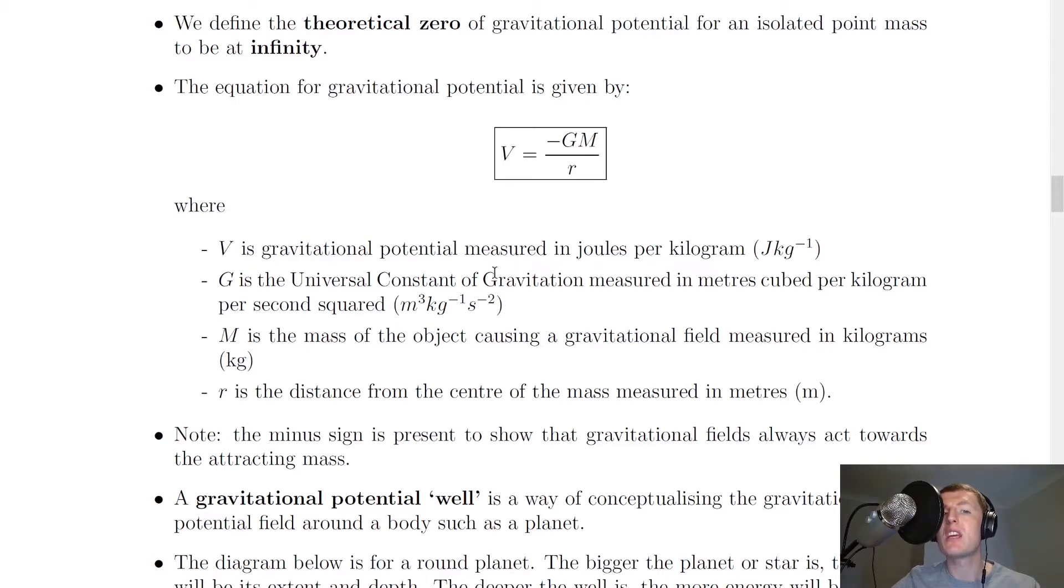Where V is the gravitational potential measured in joules per kilogram, capital G is the universal constant of gravitation measured in meters cubed per kilogram per second squared. Capital M is the mass of the object causing a gravitational field measured in kilograms, and R is the distance from the center of the mass measured in meters.